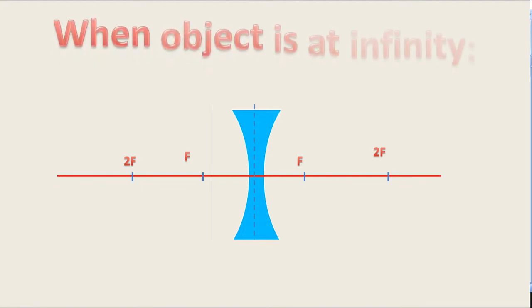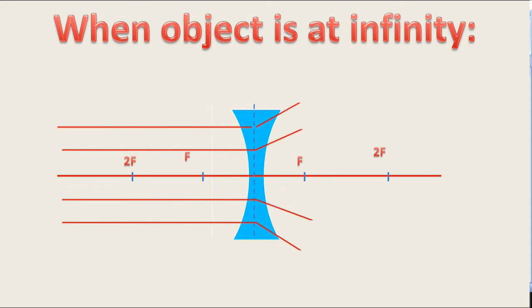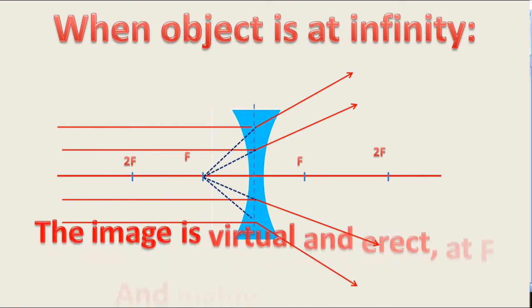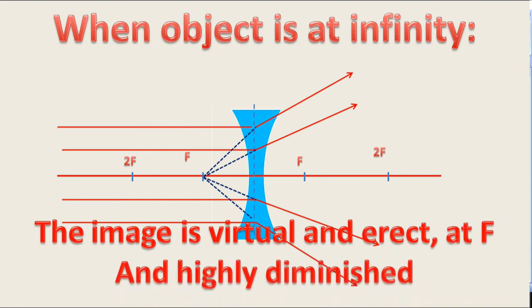When the object is at infinity, then concave lens forms image as the ray of light coming from object diverges from point F. The image is forming on the same side as the object. The nature of image is virtual, erect. The image forms at F and is highly diminished in size.